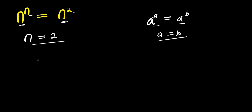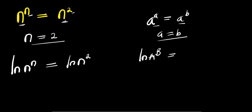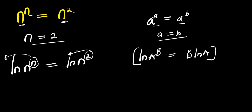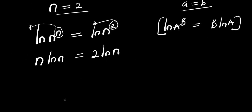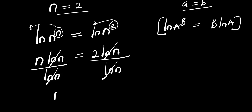We also consider making use of another method — natural log. We take the natural log of both sides: natural log of n power n equals natural log of n power 2. Using the rule that ln(a^b) equals b times ln(a), the n comes down and the 2 comes down, giving us n times ln(n) equals 2 times ln(n). Dividing both sides by ln(n), we get n equals 2.